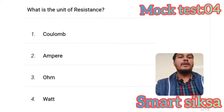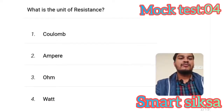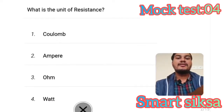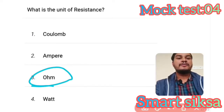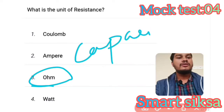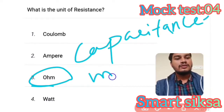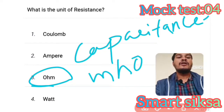Next question: What is the unit of resistance? Answer is option number 3 — Ohm. Ohm is the unit of resistance. The unit of capacitance is Farad, and the unit of resistance is Ohm.